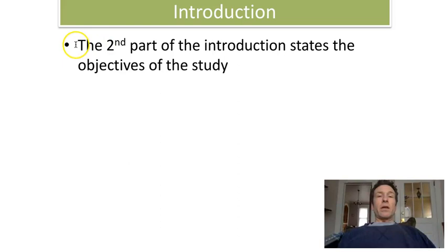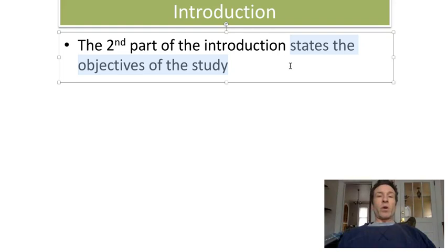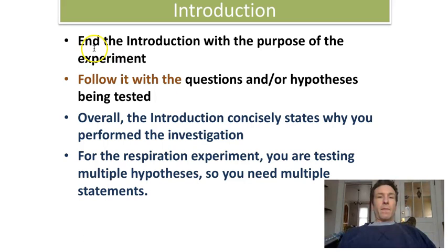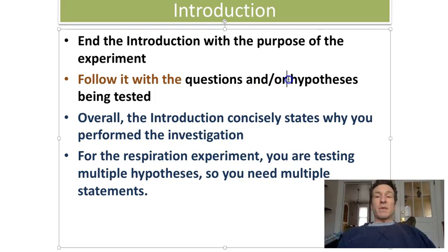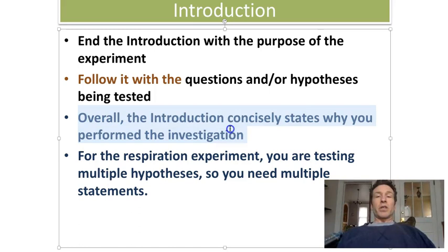The second part of the introduction is where you are going to state the objectives of your study — transitioning from what's already known to what do you seek to find out in your own work. In this section, you are going to explicitly state the purpose of your study. You will state a question, probably a general question that you are asking, as well as more specific hypotheses being tested. If you have done all of this, then the second part of your introduction is going to concisely state why you are performing the investigation.